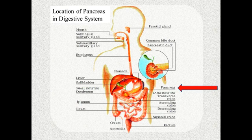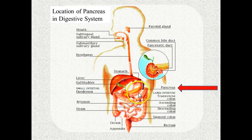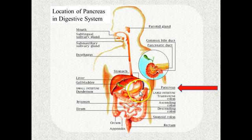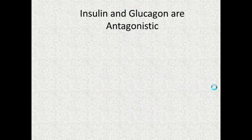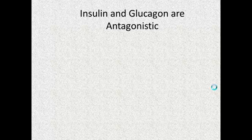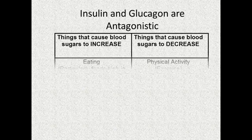As a quick refresher, this diagram shows where the pancreas is. The pancreas sits behind the stomach — here's the stomach, that half-moon-shaped organ, and the pancreas sits behind it. Insulin and glucagon are called antagonistic, which doesn't mean they don't like each other — it means they perform opposite functions.